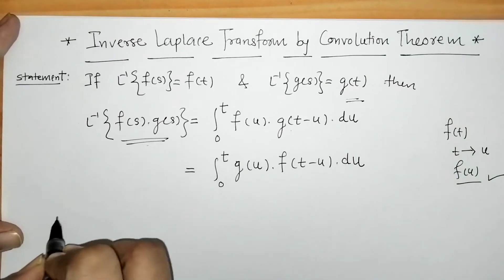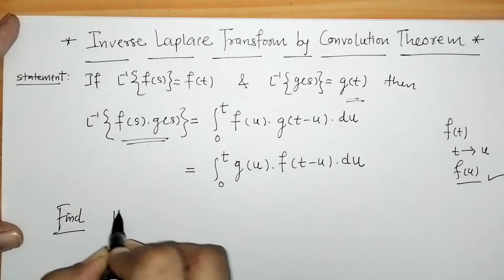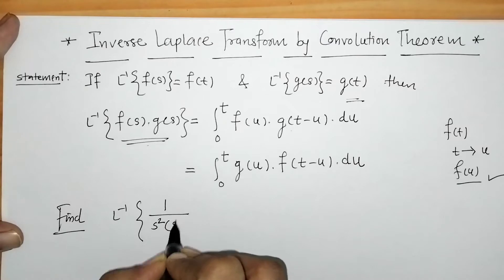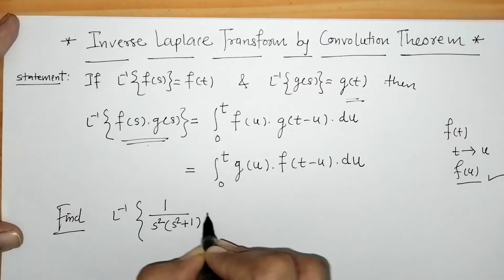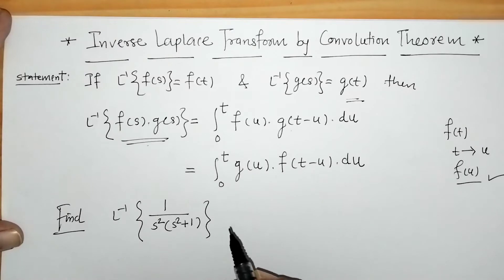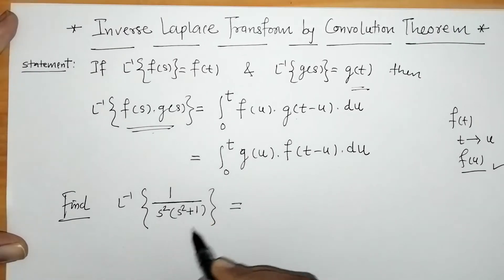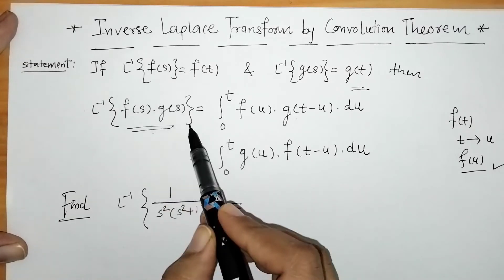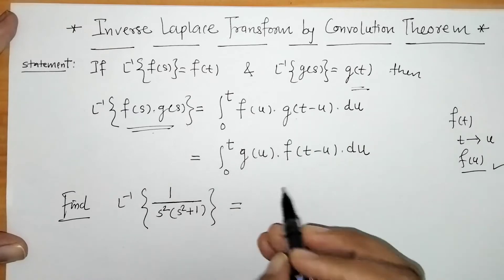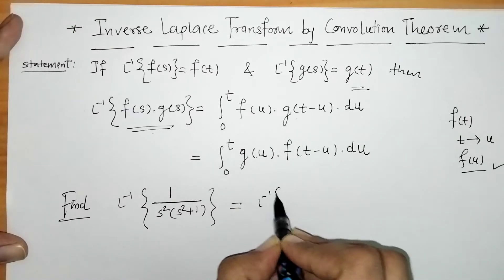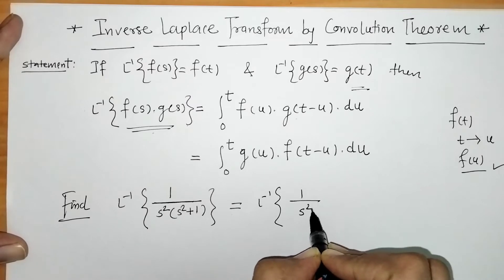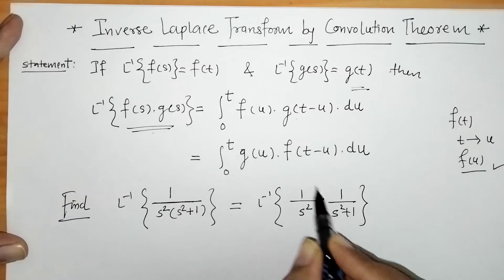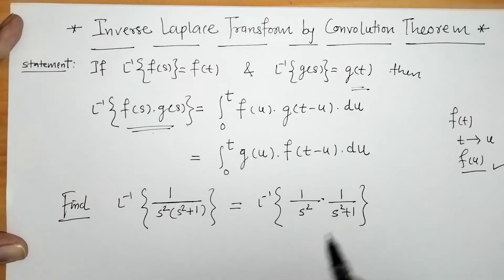We have to find L⁻¹{1 / (s²·(s² + 1))}. What we have to do first is divide this into two functions F(s) and G(s) such that we can find their inverses separately. That means we write this as 1/s² multiplied by 1/(s² + 1), and we can find the inverse of these two functions separately.